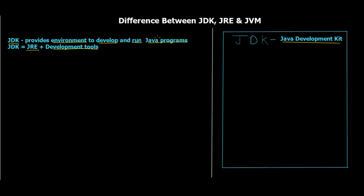From a developer's perspective — say I am a developer and I have a client who wants a Java program to be developed. I would want the entire JDK, which comes as a package containing JRE plus development tools, because it provides an environment to both develop and run Java programs. So from a developer's point of view, the complete JDK is important.